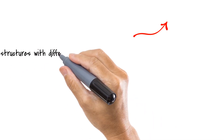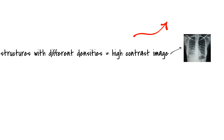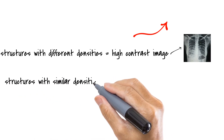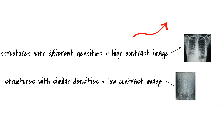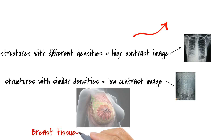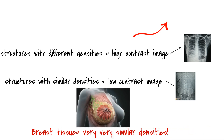In the last video, we mentioned that the composition of the breast tissue is a major reason why we need a special unit to image the breast tissue. In our video on contrast, we discussed how the composition of structures in an anatomical part determines the radiographic contrast produced. Structures with different densities produce a high contrast image, while structures with similar densities produce a low contrast image. That is the problem with breast imaging — the breast tissue is composed of structures with extremely similar densities. Using conventional methods, the image would have a really low contrast, so low that it wouldn't be diagnostically useful.